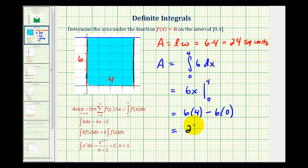So we have an area of 24 square units, which we already knew. But using this calculus technique, we'll be able to determine area under functions where there isn't a geometric formula to determine the area. We'll take a look at several more examples in this series of videos.